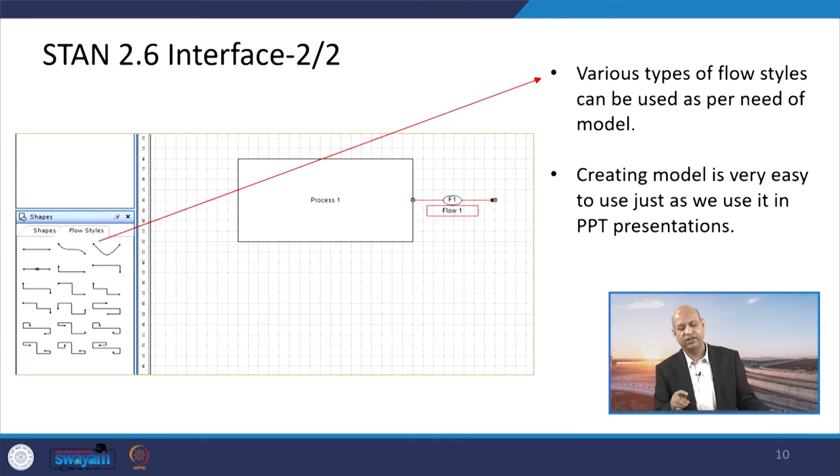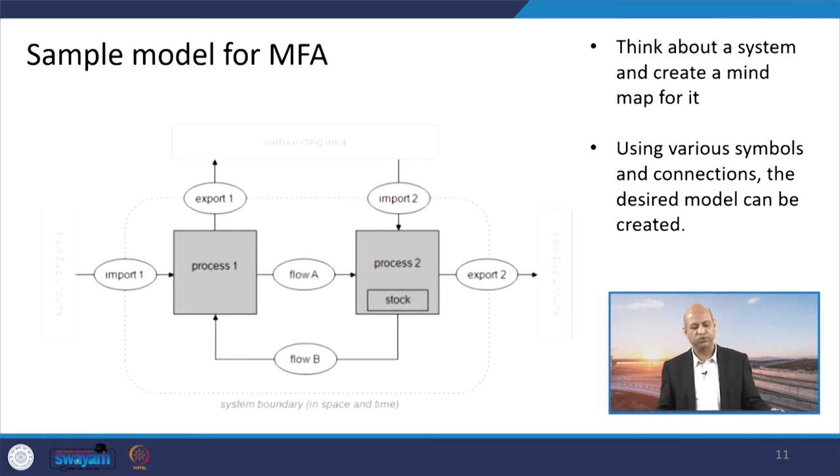Then if you want to see like you want to show the flow from one point to another, different kinds of shapes of these flow styles are there. Like if only two points are joined straightway, then straight line can be there with arrow. But if there are different kind of features, you have to go in different routes, so depending on that different kinds of shapes are there which can be used to show the flow style.